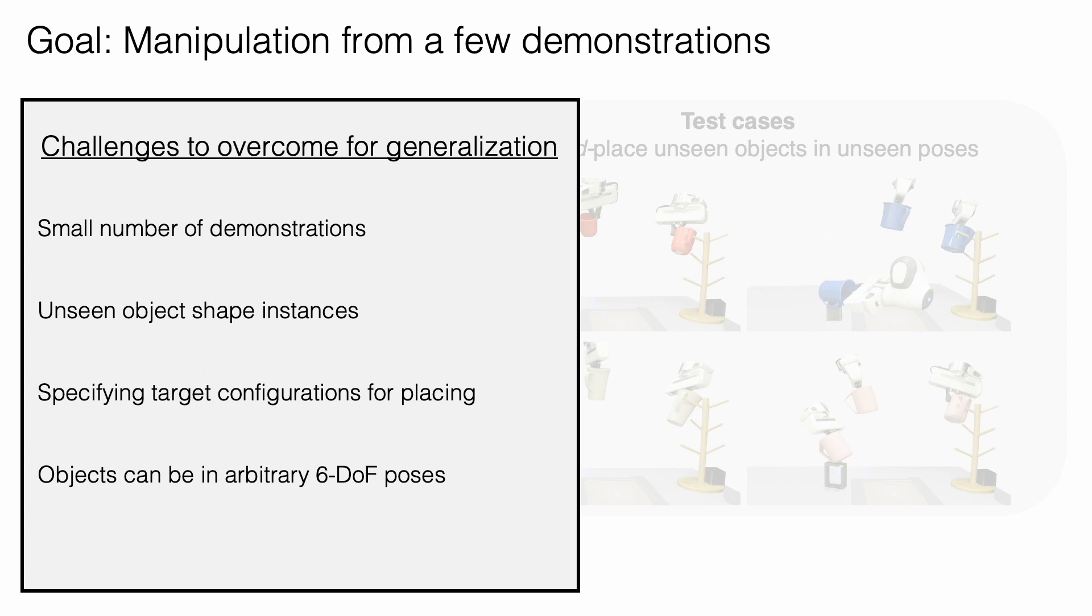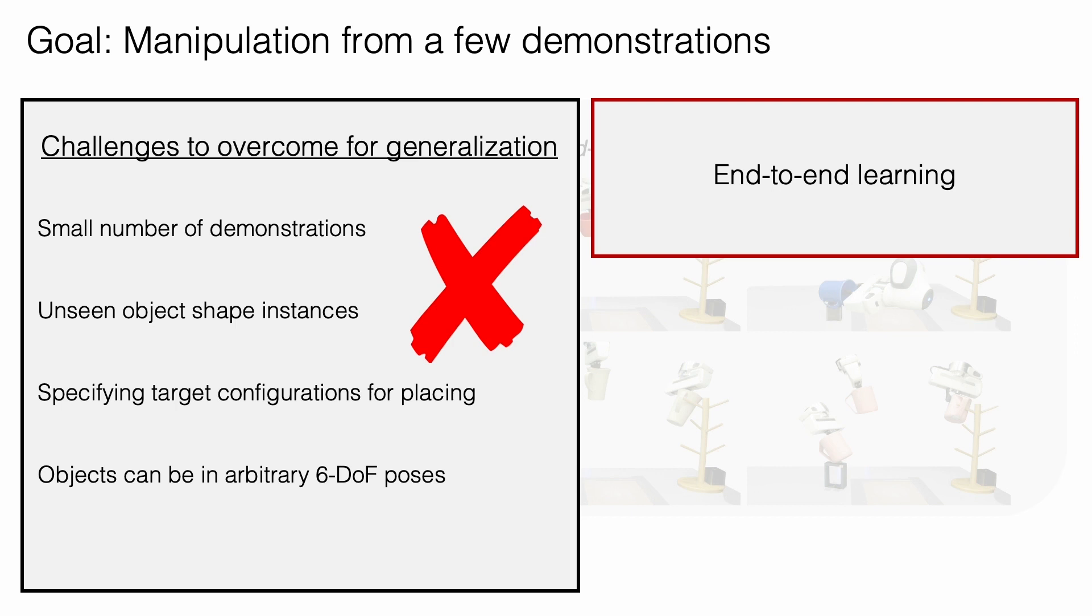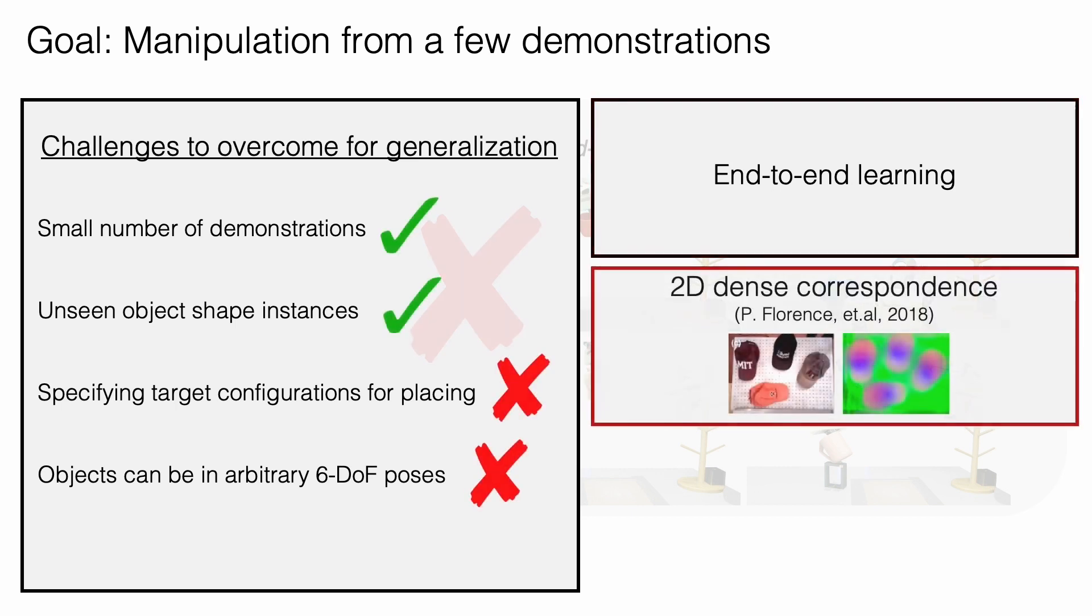What are the main challenges to overcome in building such a system? First, using a very small number of demonstrations means end-to-end training will not generalize. We also wish to enable both picking and placing. Prior work has used dense correspondence models to grasp unseen objects from a single demonstration, but modeling correspondence in 2D makes it difficult to specify a target configuration for placing.